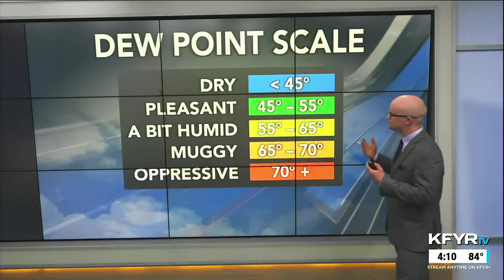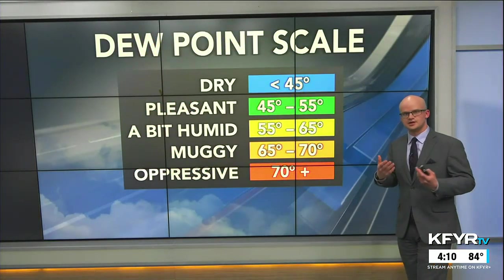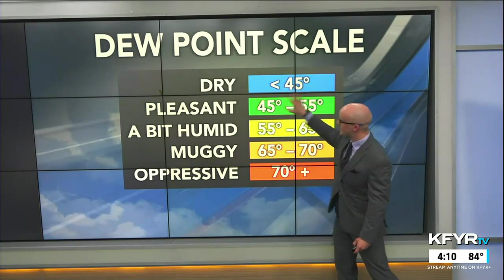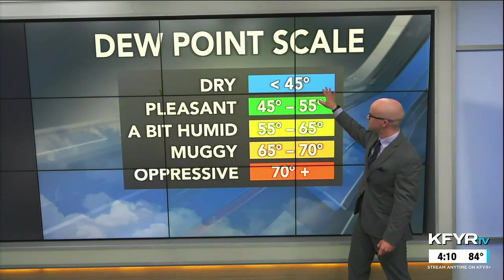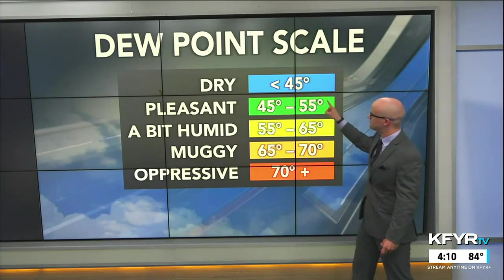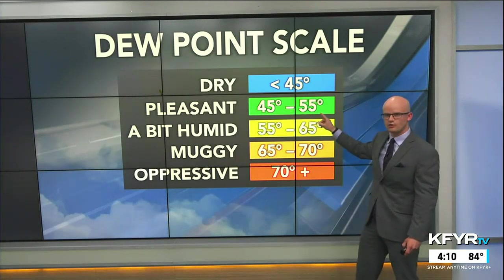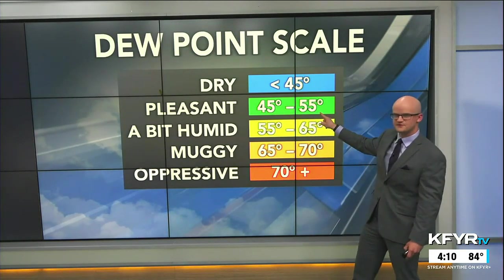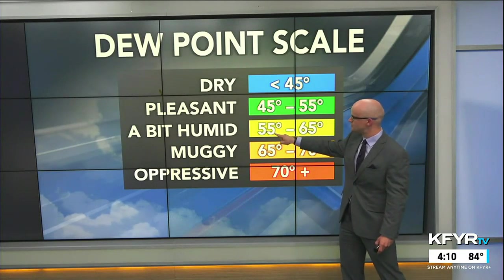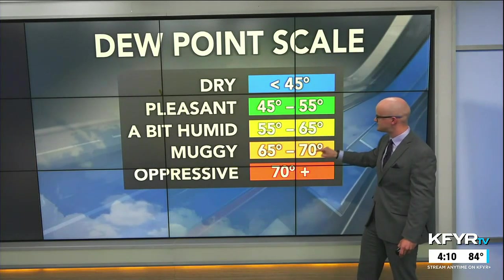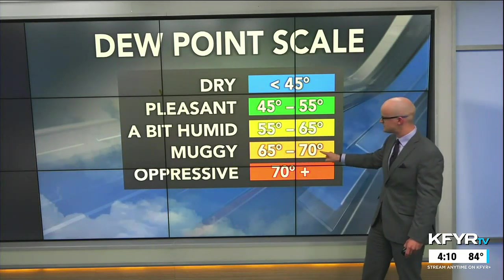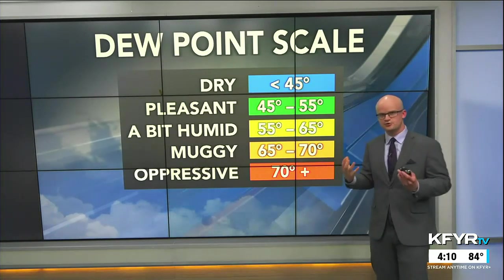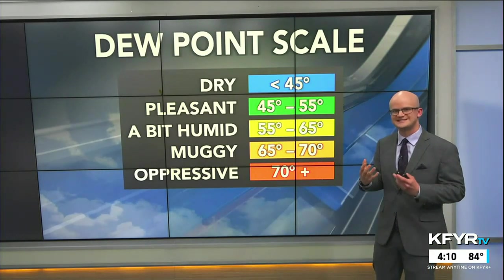The dew point scale has five points. Dry air — not a whole lot of moisture in the atmosphere — is a dew point less than 45 degrees. Pleasant air, still not a whole lot of moisture, is between 45 and 55 degrees. It's a bit humid with dew points between 55 and 65. Muggy between 65 and 70. And downright oppressive — that air you can wear — when dew points are more than 70 degrees.